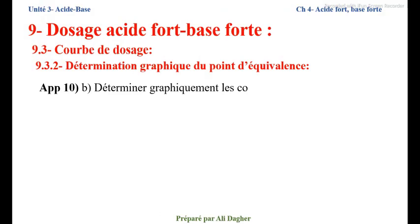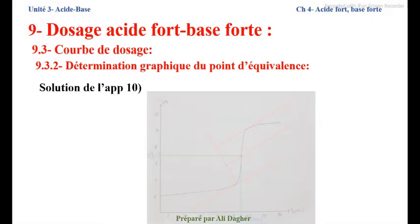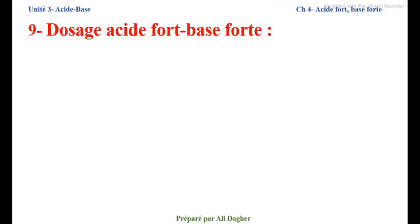Application 10, partie B : déterminer graphiquement les coordonnées du point d'équivalence. On a tracé la courbe, et d'après la méthode des tangentes parallèles, on peut déterminer le point d'équivalence E. Le volume de base versée à l'équivalence VBE = 20 millilitres, et pH E = 7. Ce sont les coordonnées du point d'équivalence.